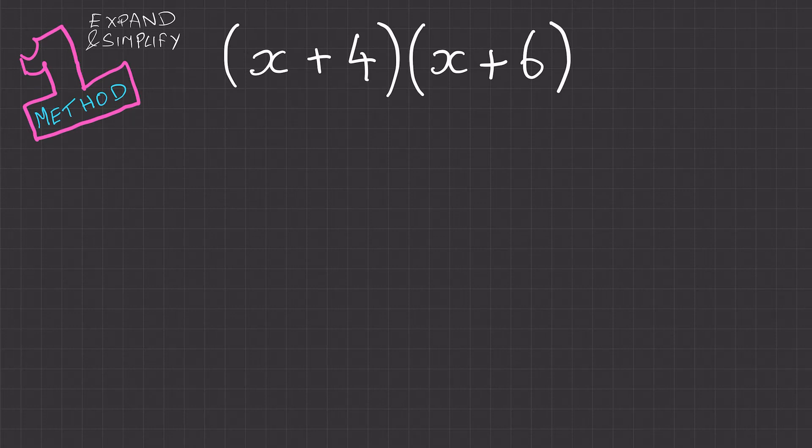We're going to expand and simplify these brackets. Now we've got x plus 4 and x plus 6, a pair of brackets, and what these mean when they're next to each other is we're going to times them. So it means everything in x plus 4 is going to be multiplied by everything in x plus 6.